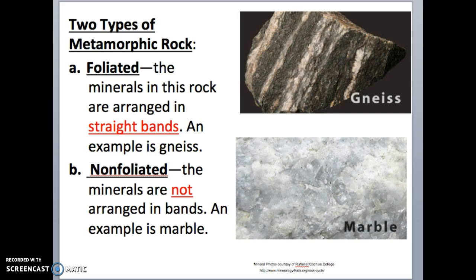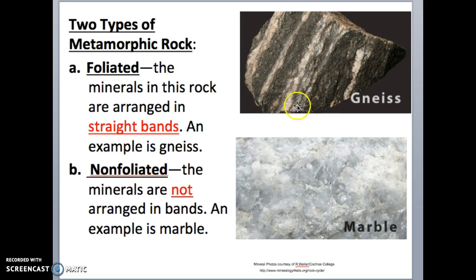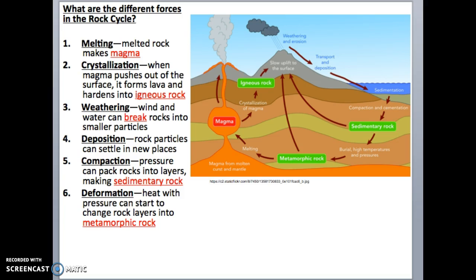There are two types of metamorphic rock: foliated and non-foliated. Foliated metamorphic rocks have minerals arranged in straight bands — an example is gneiss, shown here. Non-foliated metamorphic rocks are types where minerals are not arranged in bands; an example is marble. You can see there's a big difference between the bands in gneiss and marble.